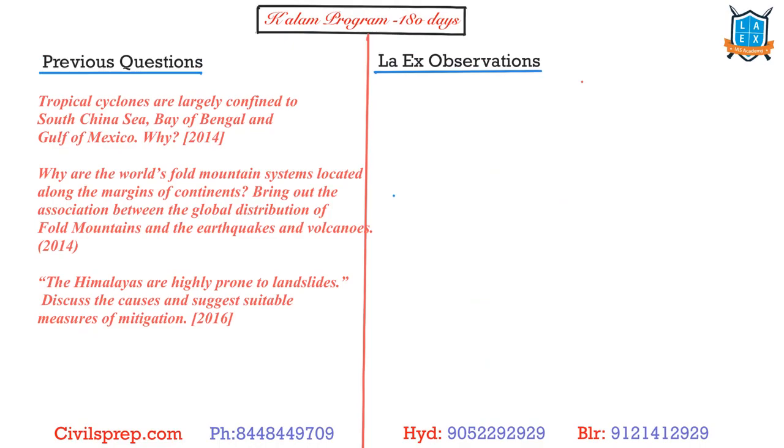And then if you look at previous year questions, tropical cyclones are largely confined to South China Sea, Bay of Bengal and Gulf of Mexico because of the warm water that is there. Again cyclones they asked. World's fold mountains we have already analyzed. Himalayas are highly prone to landslides, discuss the causes and suggest mitigation measures associated with disaster management. So guys mostly they are associated with the major events that occur like cyclones, landslides and all. As the term clearly indicates please don't try to read what is landslide alone but try to read where landslides are occurring and why they are occurring and what are the reasons and what measures should be done so that even disaster management would be easy for you.